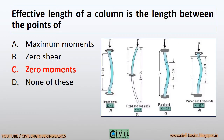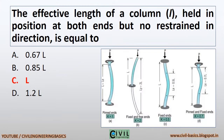Effective length of a column is the length between the points of zero moments. You can see the various columns with different end conditions and for that its effective lengths are different as shown. The effective length of a column L, held in position at both ends but not restrained in direction, is equal to L. When a column is not restrained in direction at both ends, its effective length is equal to its original length.